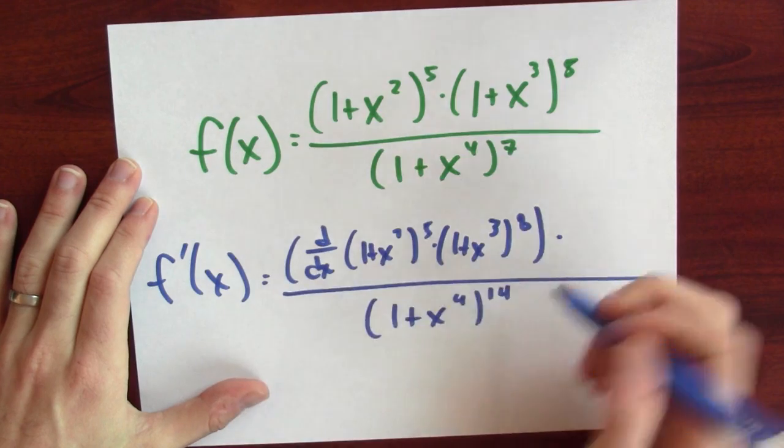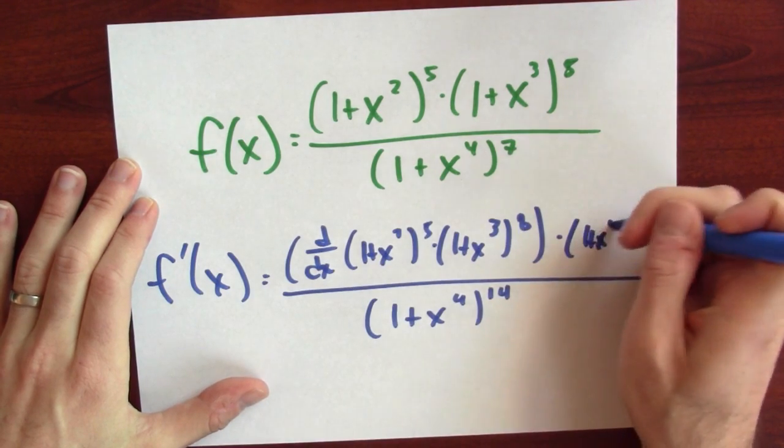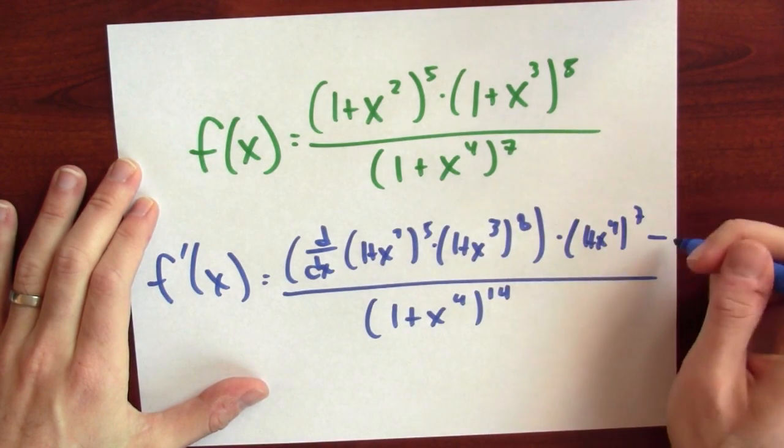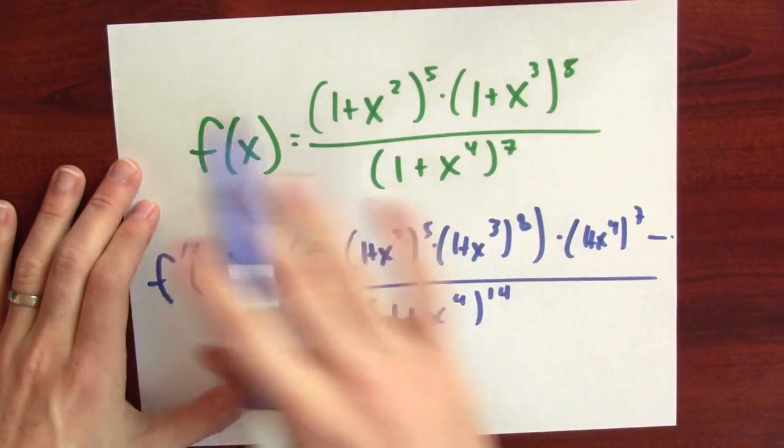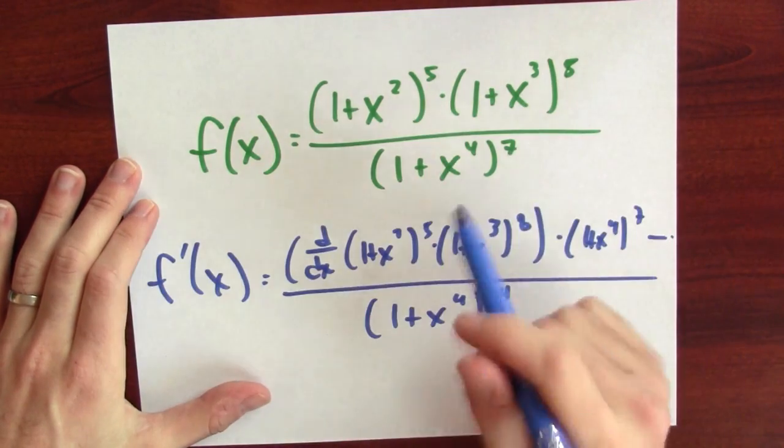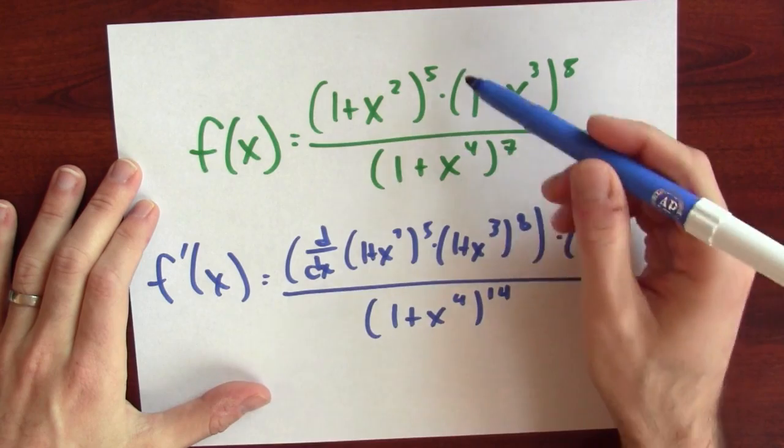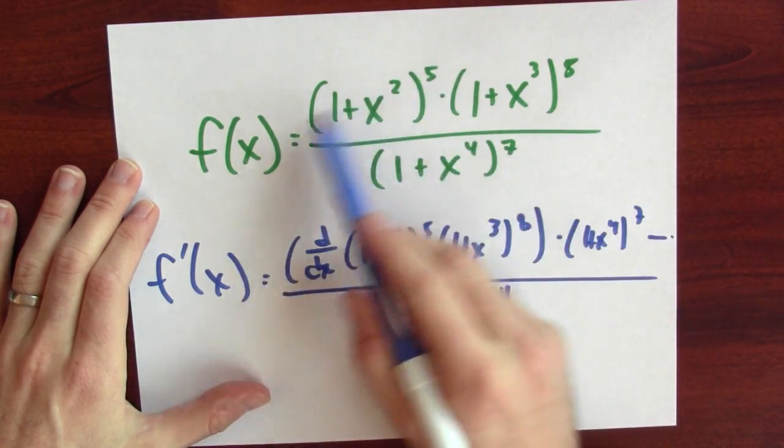So it's the derivative of the numerator times the denominator, and it keeps going, right? Then I've got to subtract the derivative of the denominator times the numerator. But look, you can do this derivative just by careful application of the quotient rule, the product rule, the power rule, and the chain rule. There is one thing stopping you: your sense of human decency. It's just an awful calculation. Nobody would want to do that.